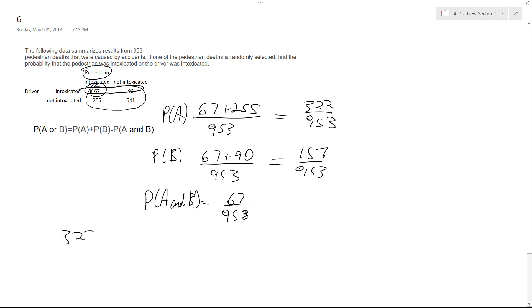Alright, so total is going to be 322 over 953 plus 157 over 953 and then minus the 67 over 953. And what we end up with is approximately 0.432319 and I'm just going to round it to the thousands so I end up with 0.432 and that's it.